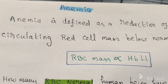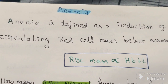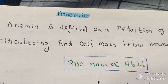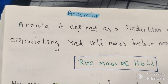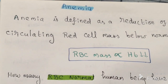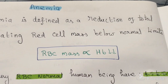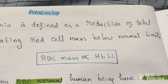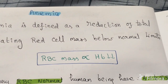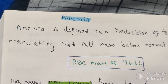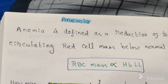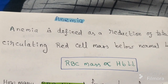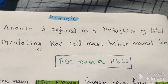Today's topic of discussion is anemia. What is anemia? How to define anemia? Anemia is defined as a reduction of total circulating red cell mass below the normal limit.